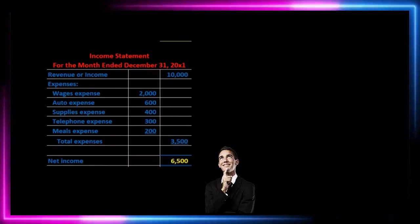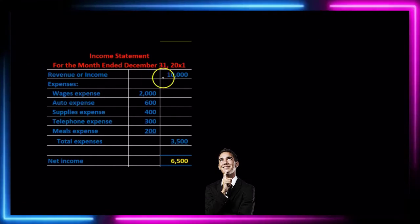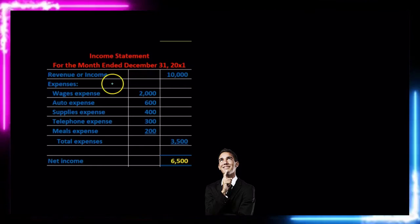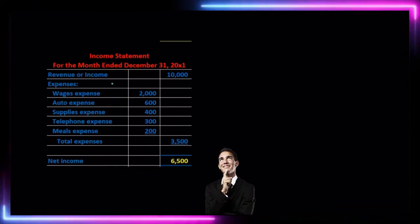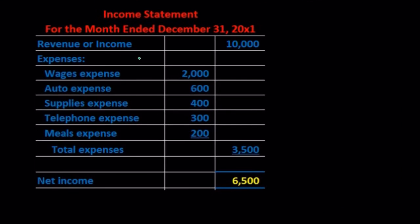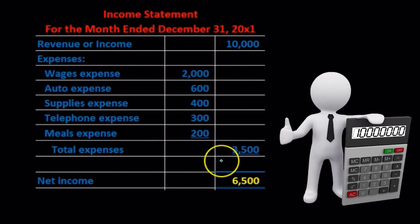If we look at a single-step income statement, it might look something like this. We just have one format of revenue, pulled over to the right-hand side. Then we have all expenses grouped together in one grouping. If we had inventory, cost of goods sold would just be grouped in with all the other expenses rather than breaking out subcategories such as gross profit or gross margin. We then have the simple calculation of net income as revenue minus expenses.